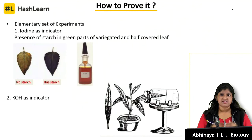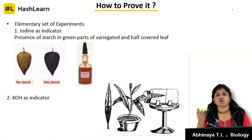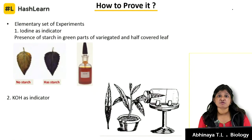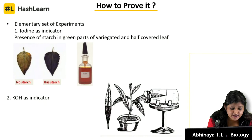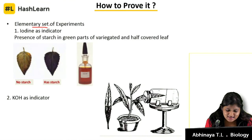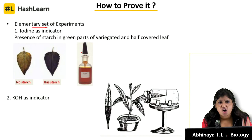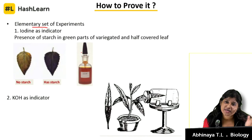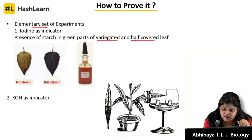How do we prove photosynthesis? The evidence is to prove photosynthesis; we will go stepwise. Elementary set of experiments means a simple basic experiment. We all know the end product of photosynthesis is starch — one type of carbohydrate. To show the presence of starch in the leaf, we took a variegated and a half-covered leaf. Variegated means differently colored leaf — certain leaves will have red and yellow stripes, with only some parts green.